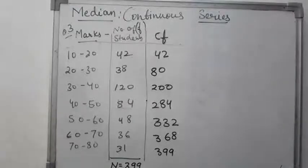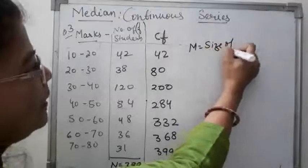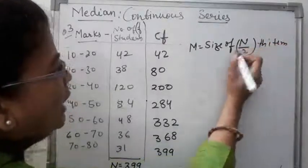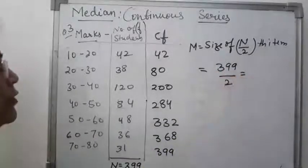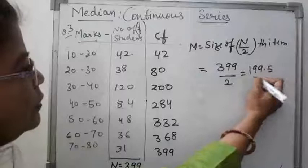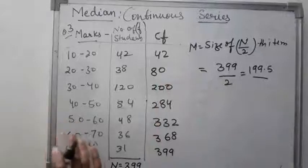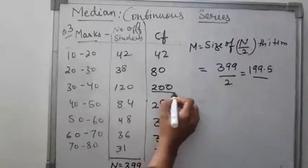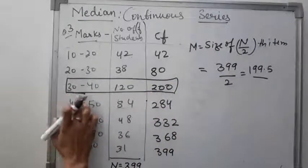First, we find out the median class interval using the formula: size of (N/2) th item. N = 399, so 399 / 2 = 199.5. We look in the cumulative frequency column for where 199.5 falls, and the median class interval is identified as 32–40.